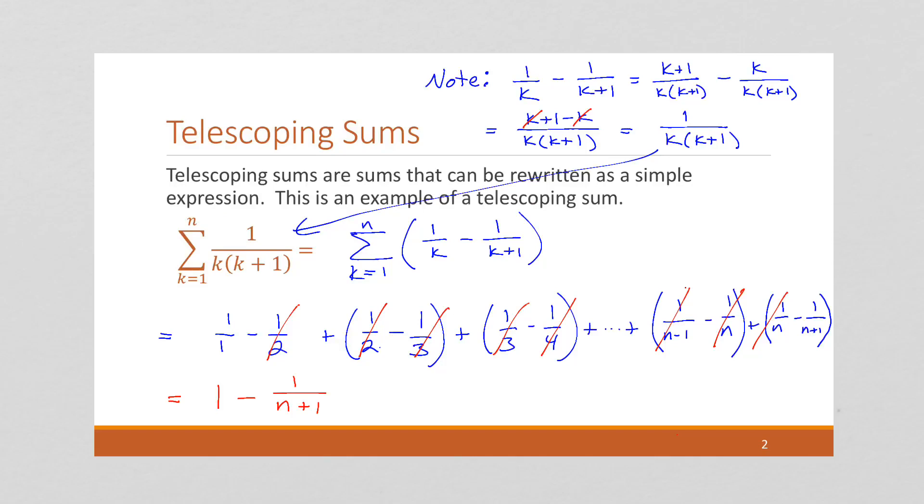Which if you notice, we can once again get like denominators. This is n plus 1 over n plus 1 minus 1 over n plus 1. Now we have like denominators. We can simplify. This is n plus 1 minus 1 or just n over n plus 1.